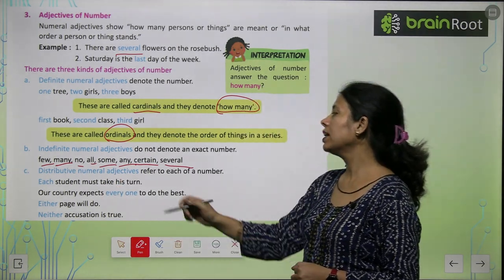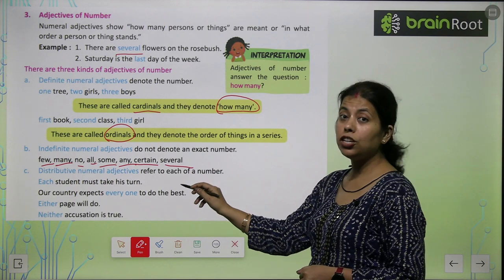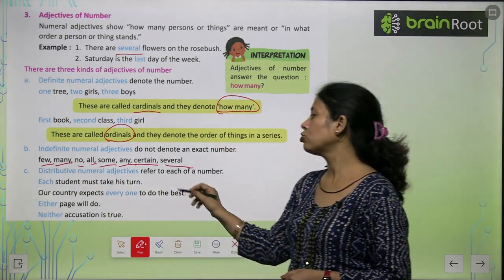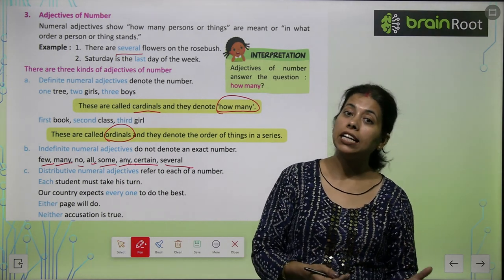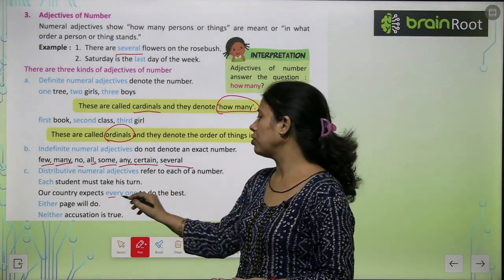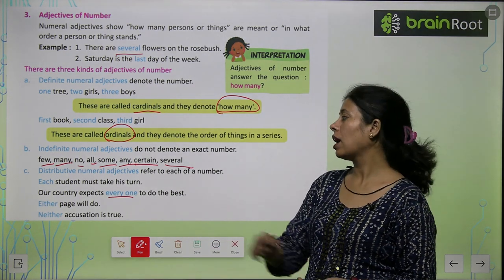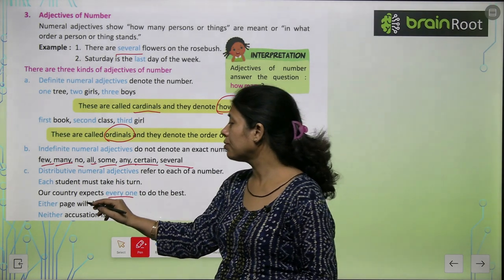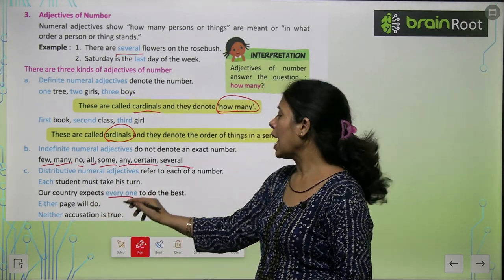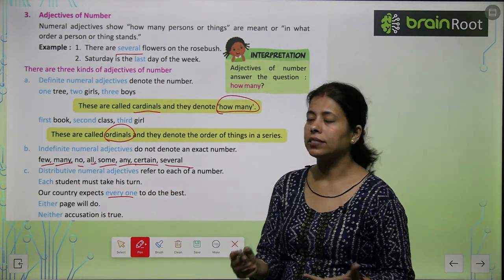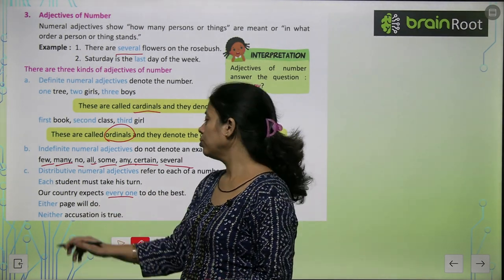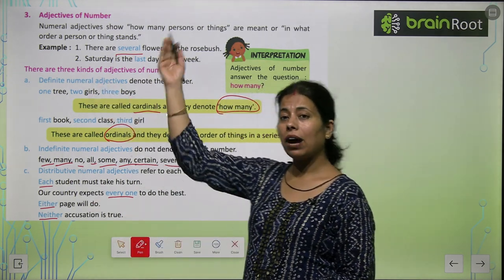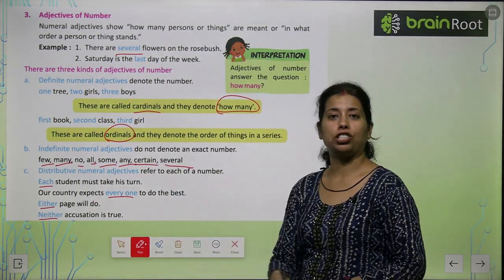Then distributive — distributive में refer to each of the number। Each student must take his turn. Each, either, everyone. Our country expects everyone to do their best. Either page will do, neither, either, each। तो यह हमारे कुछ types हैं adjective के।